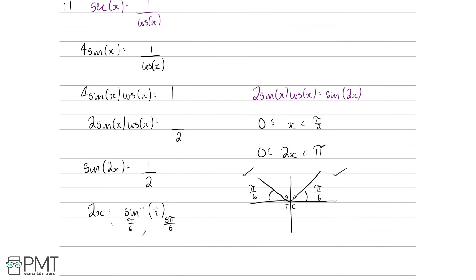Now we want to find x, not 2x, so dividing both sides by 2. We've only gone around once in the range 0 to π, so we only have two solutions. Dividing both sides by 2, we have x equals π/12 and 5π/12, and both fit within our original range of 0 to π/2.